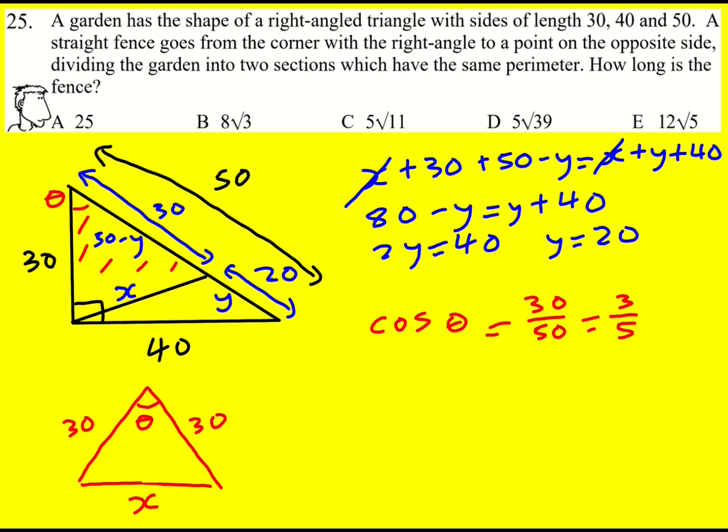And then I can say that that's going to be true for this part as well. And therefore let's use the cosine rule. So the cosine rule says that c squared equals a squared plus b squared minus 2ab cos c.